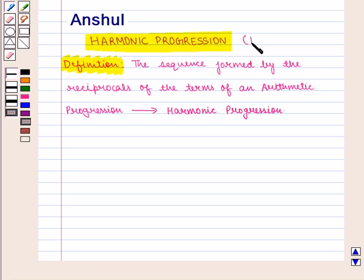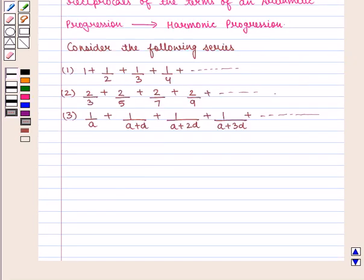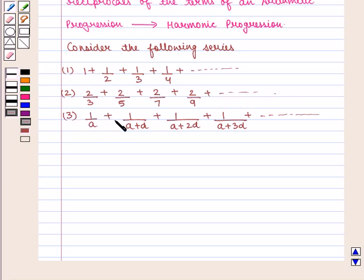It is denoted by HP. Consider the following series. First: 1 plus 1 by 2 plus 1 by 3 plus 1 by 4 plus and so on. Second: 2 by 3 plus 2 by 5 plus 2 by 7 plus 2 by 9 plus and so on. Third: 1 by A plus 1 by (A plus D) plus 1 by (A plus 2D) and so on. All these series are in harmonic progression.